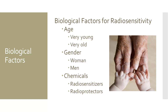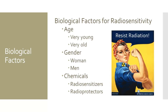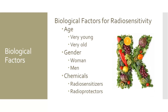Studies have also demonstrated that gender can affect how sensitive an organism's cells are to radiation. Female cells have been shown to be slightly more resistant to the effects of radiation. Lastly, there are chemicals that have been shown to make an organism either more sensitive or more resistant to radiation. Megadoses of vitamin K, pyrimidines, and methotrexate all make cells more radiosensitive, while sulfhydryl chemicals make the body more resistant to the biological effects of radiation.